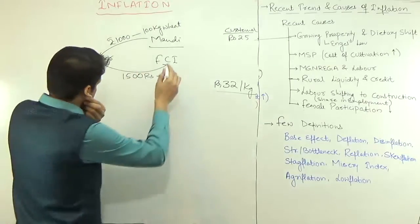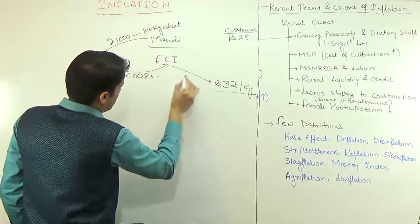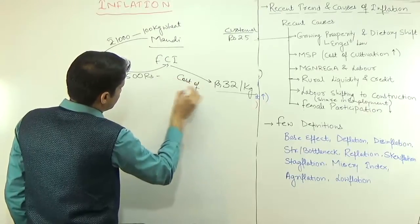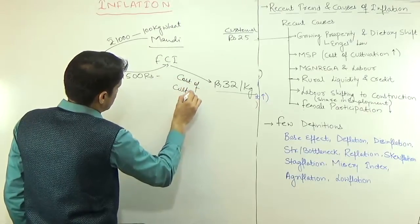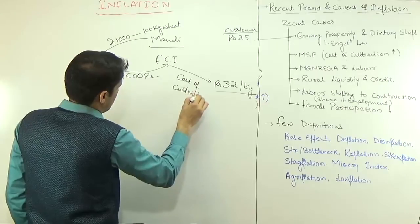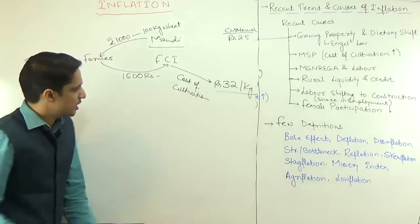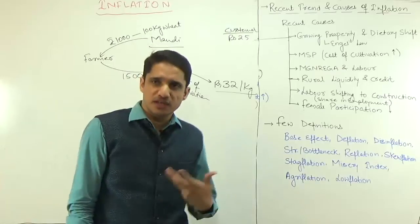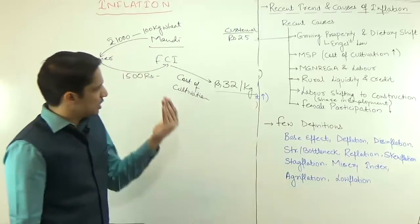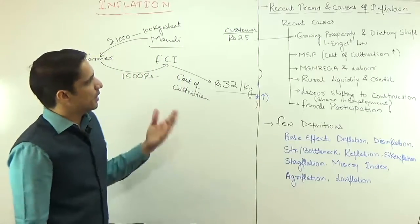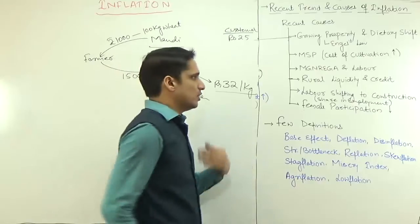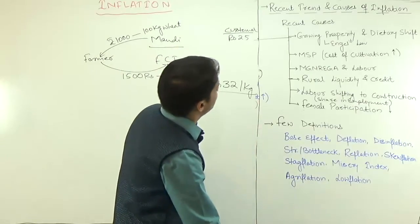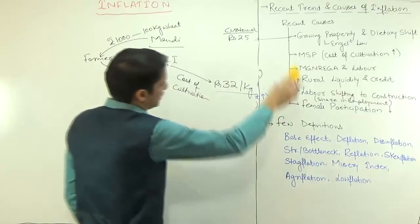Because of MSP, the cost of cultivation has also increased. Other input items like diesel and fertilizer have also seen price rises. All of these together contribute to inflation.